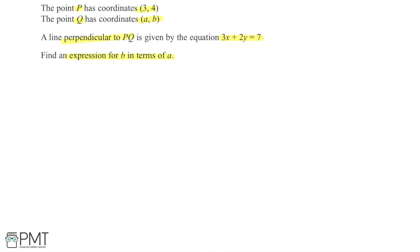If we've got the coordinates of P and Q on the line PQ, we could use these to work out the gradient of PQ in terms of A and B. That might come in really useful if we can work out what the gradient of PQ is using another method as well — possibly using the line perpendicular to PQ — and then we can make them equal to each other to get an expression for B in terms of A.